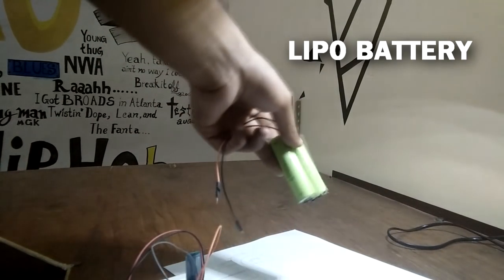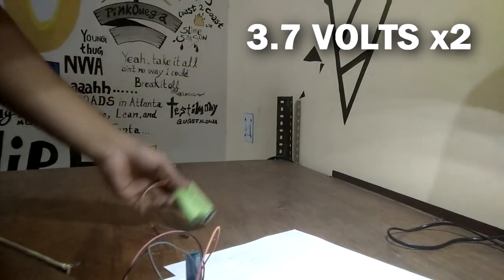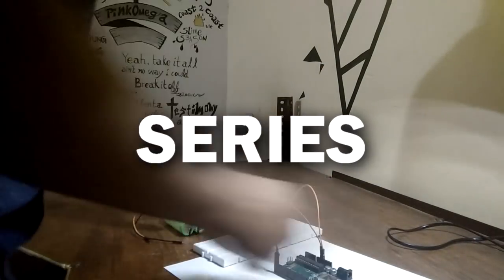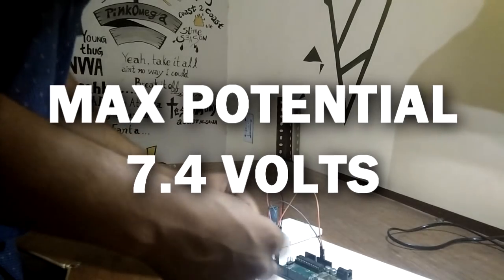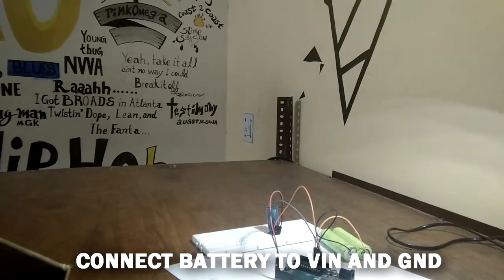In order to power the Arduino, I'm using this LiPo cell battery which consists of two 3.7V cells connected in series to create max potential of 7.4V. Let's connect this battery to our Arduino VIN and GND pins.